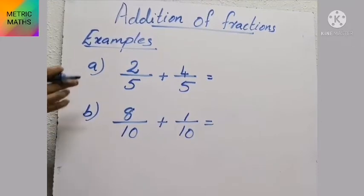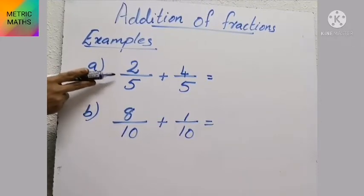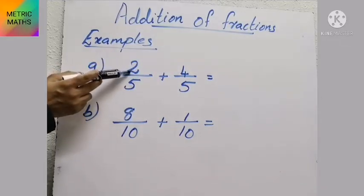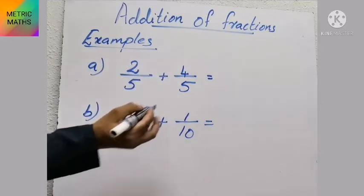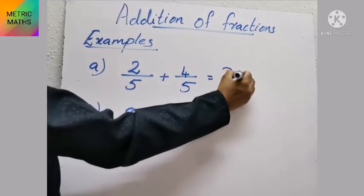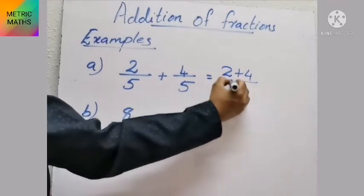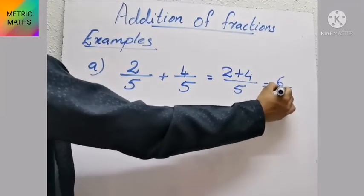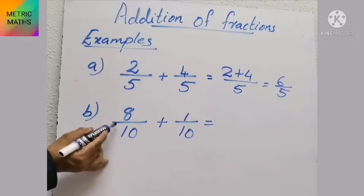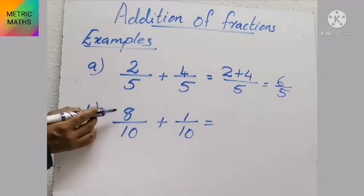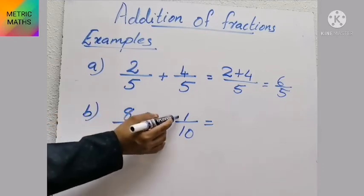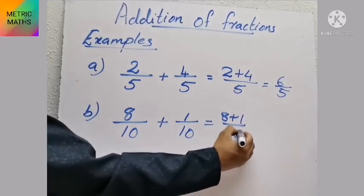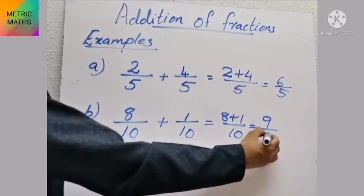Look at these addition examples. The first question is 2 by 5 and 4 by 5 — just add the numerators: 2 plus 4 by 5, which equals 6 by 5. The second example is 8 by 10 and 1 by 10 — the numerators are 8 and 1, so 8 plus 1 by 10 equals 9 by 10. So 9 by 10 is the answer.